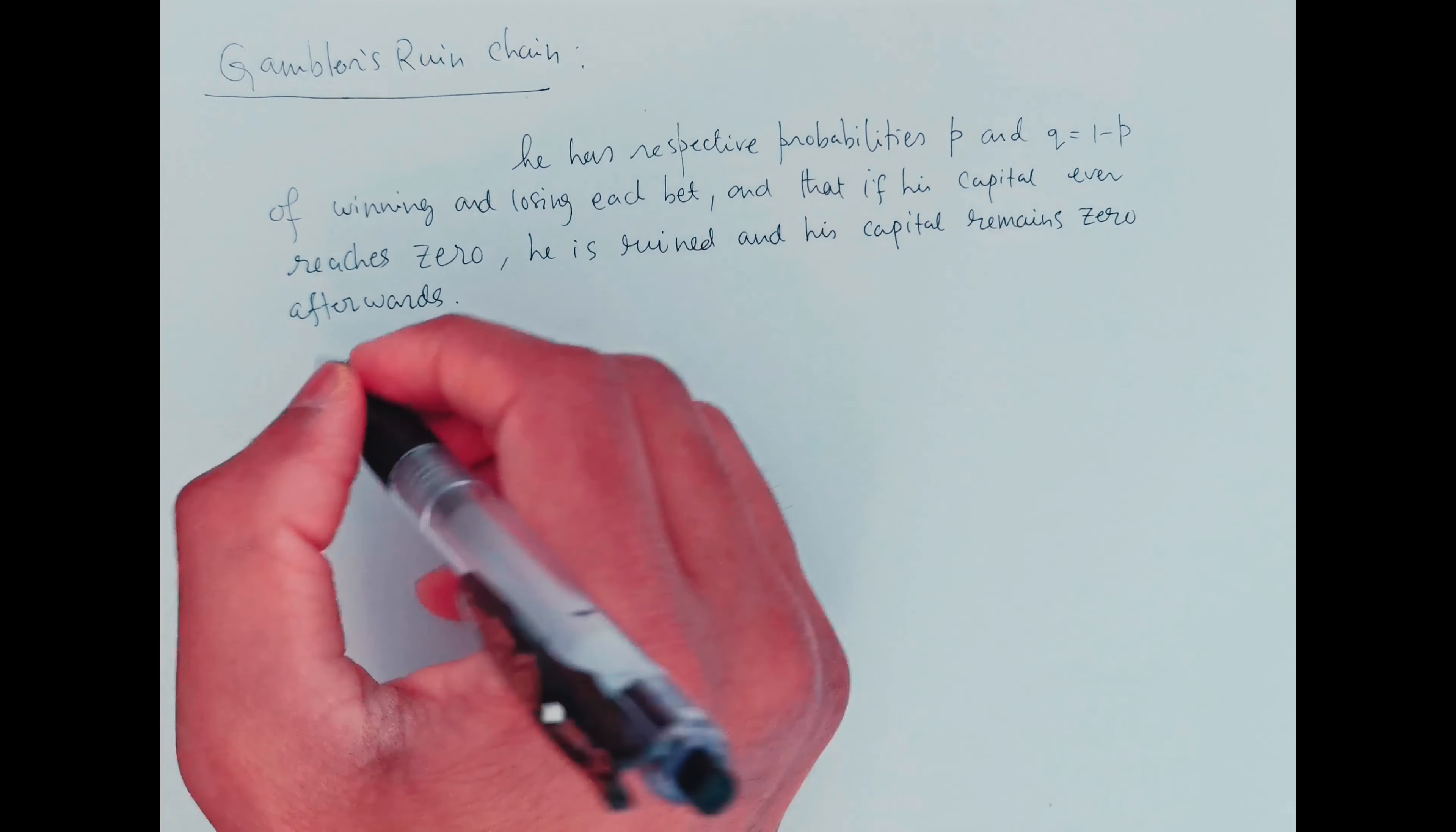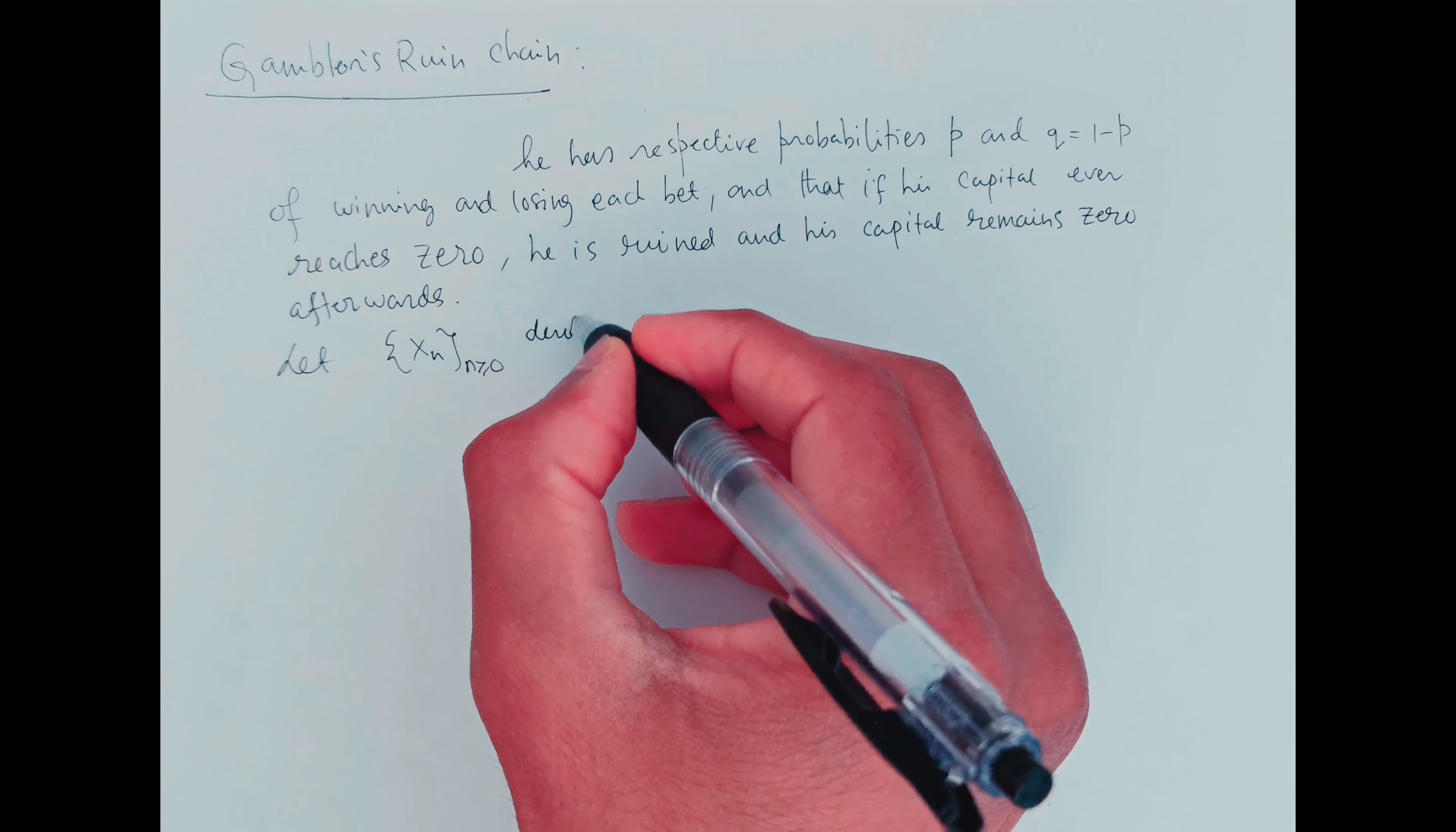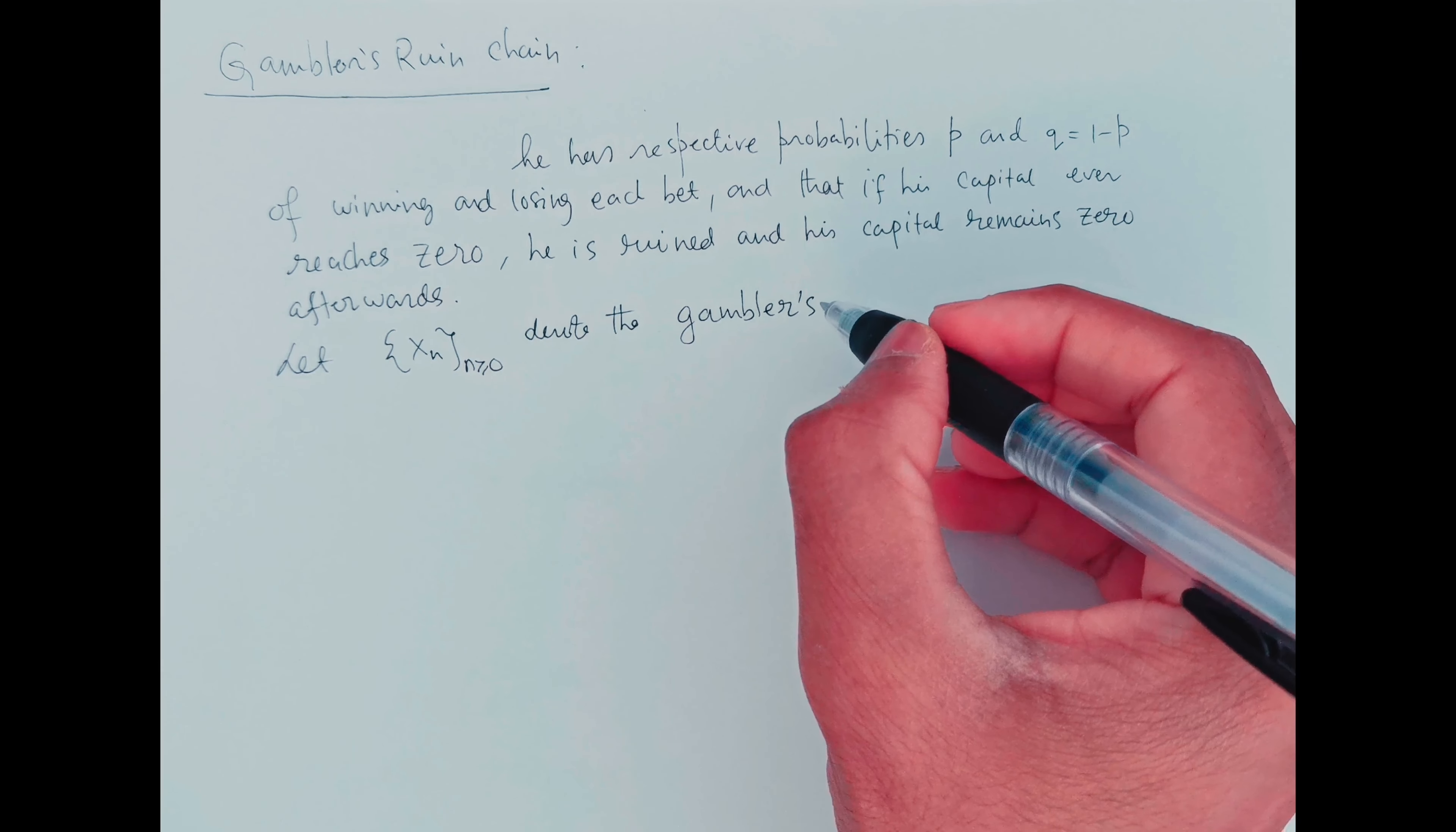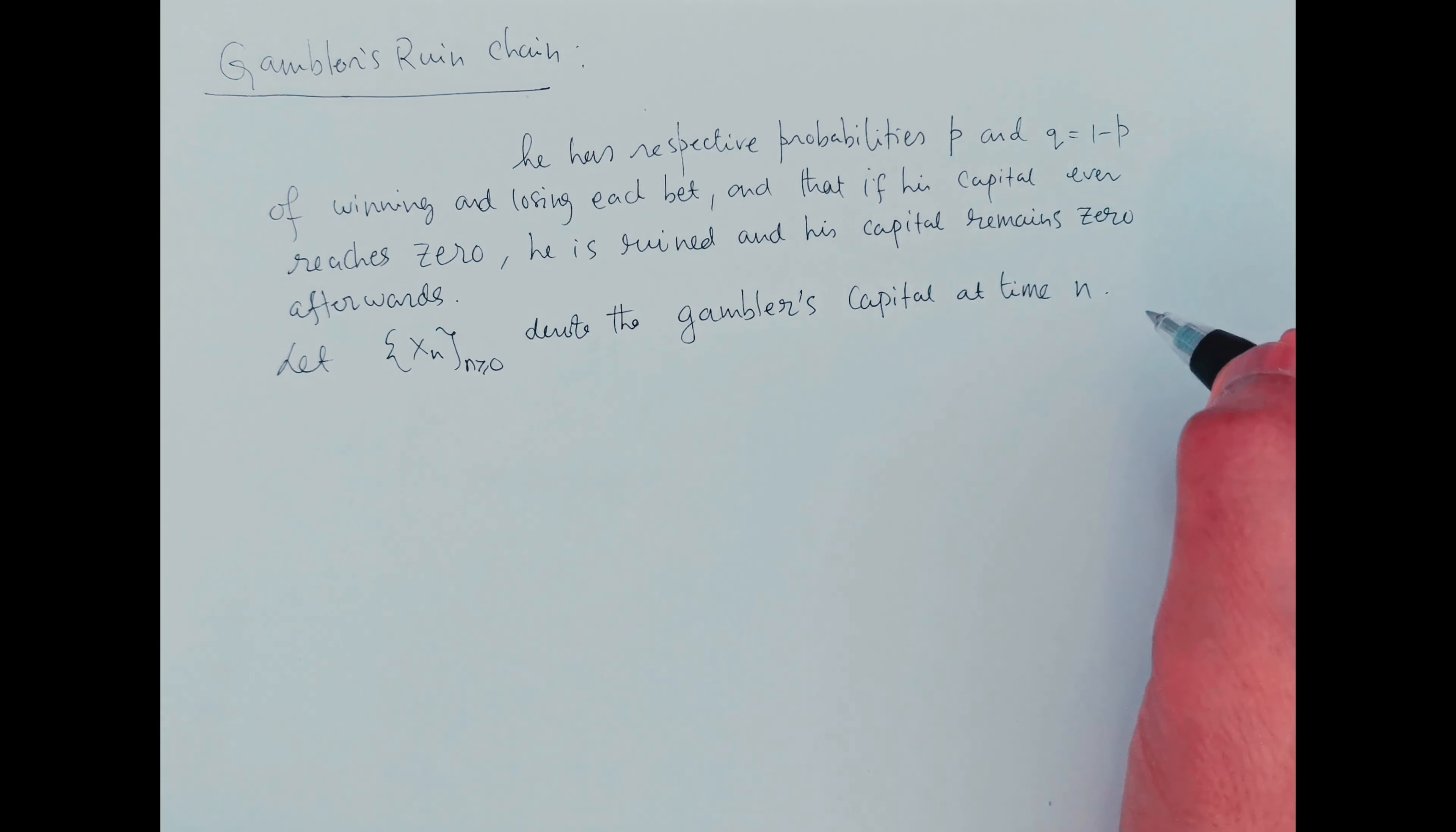Now let x_n denote the gambler's capital at time n. This is a Markov chain in which 0 is an absorbing state. We just learned the definition of absorbing state in the previous video.